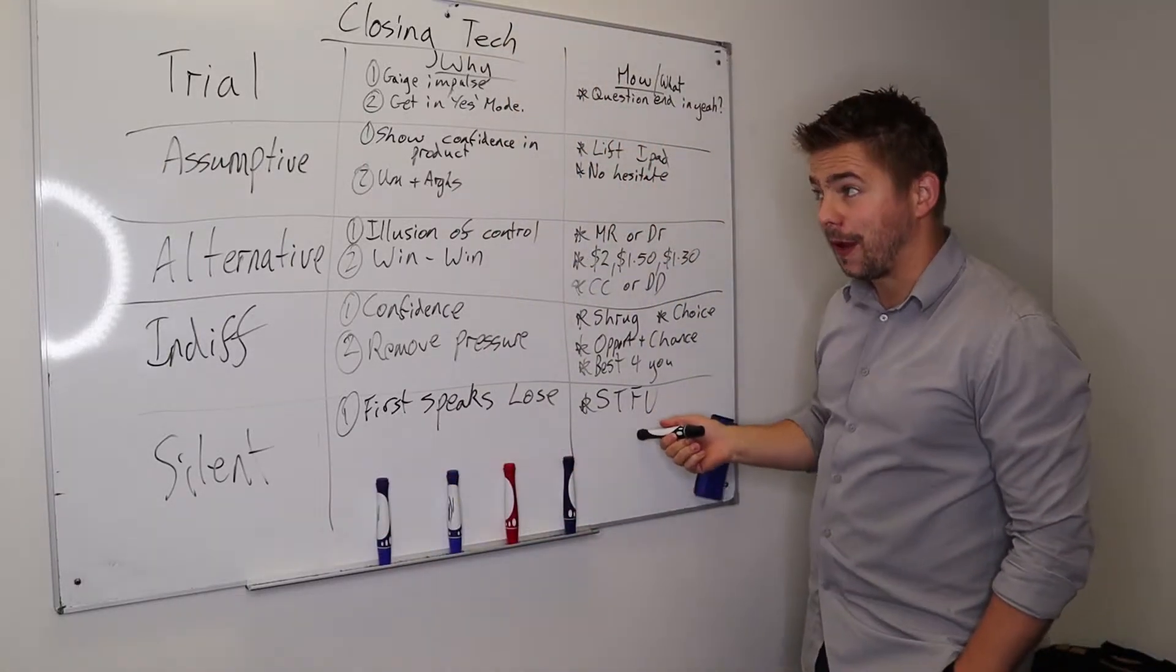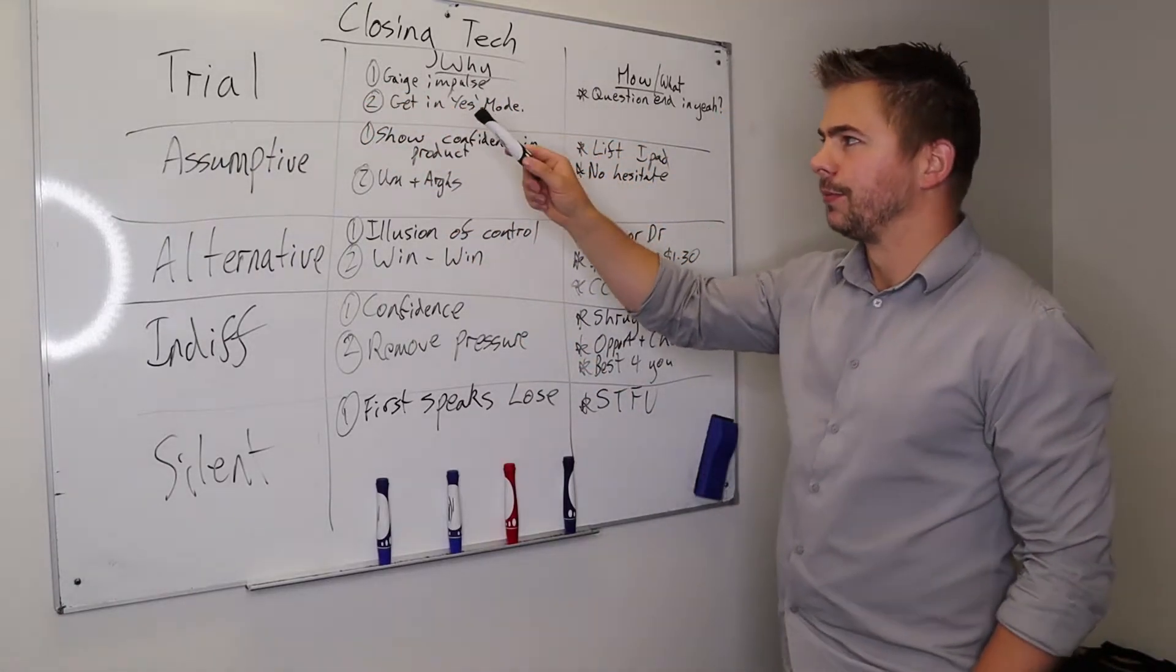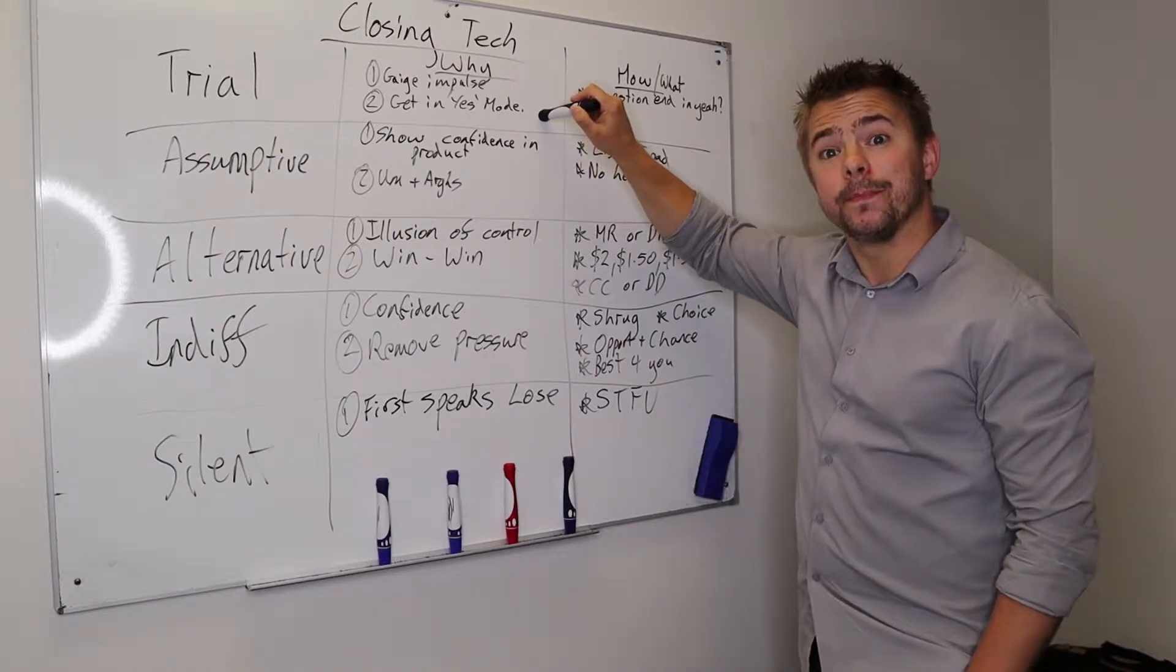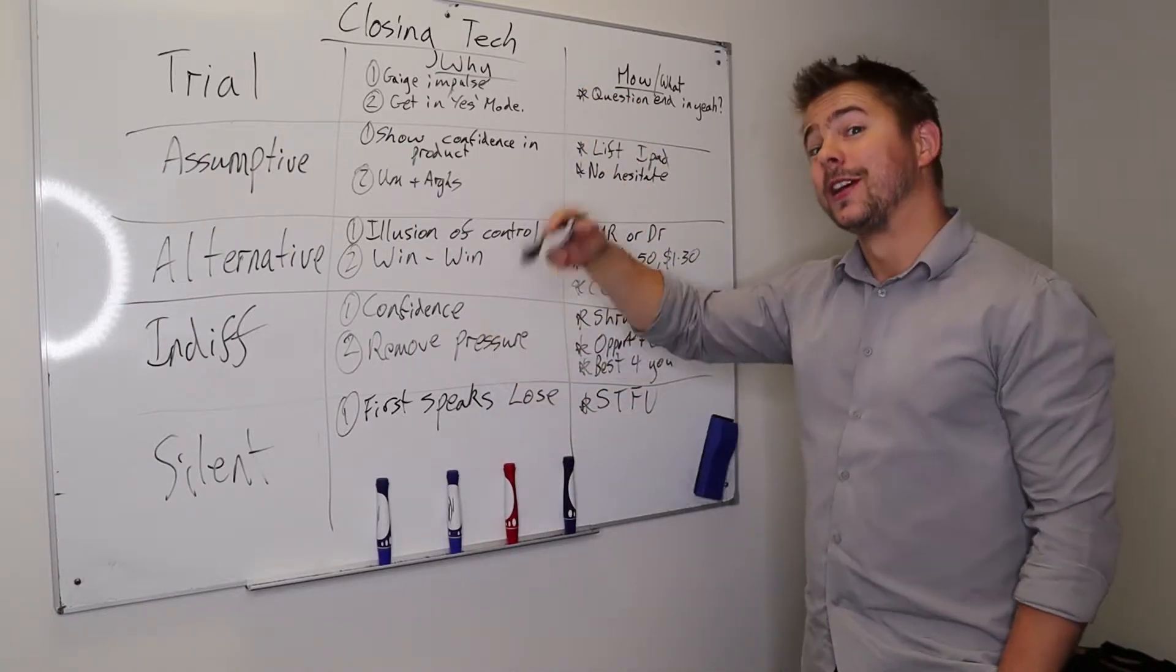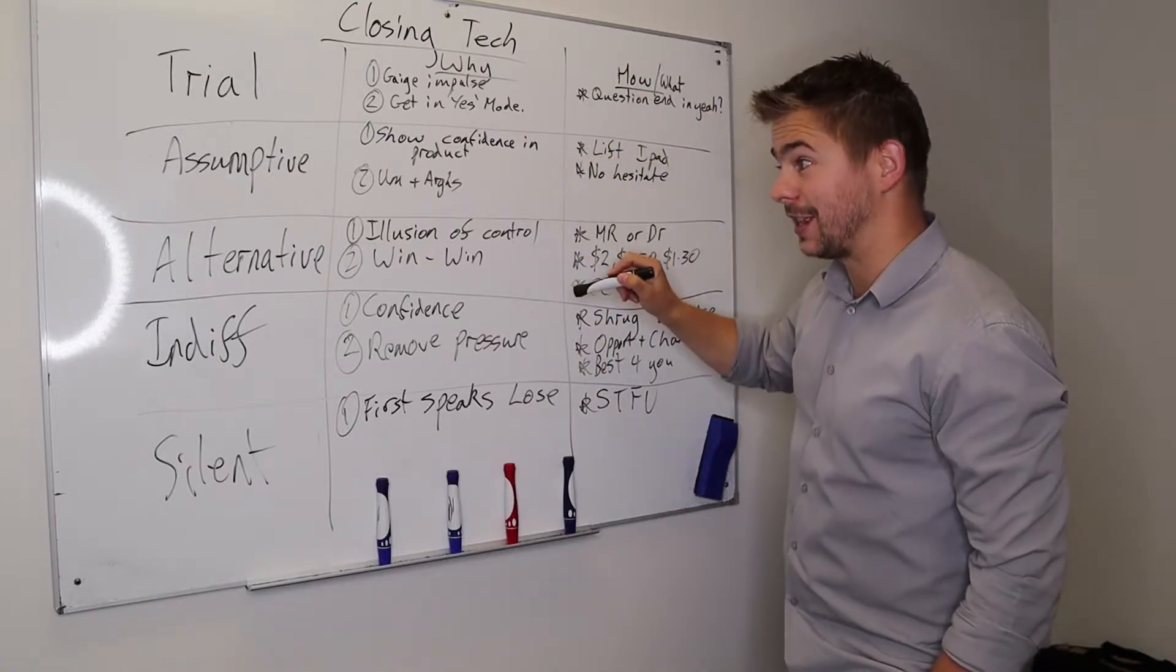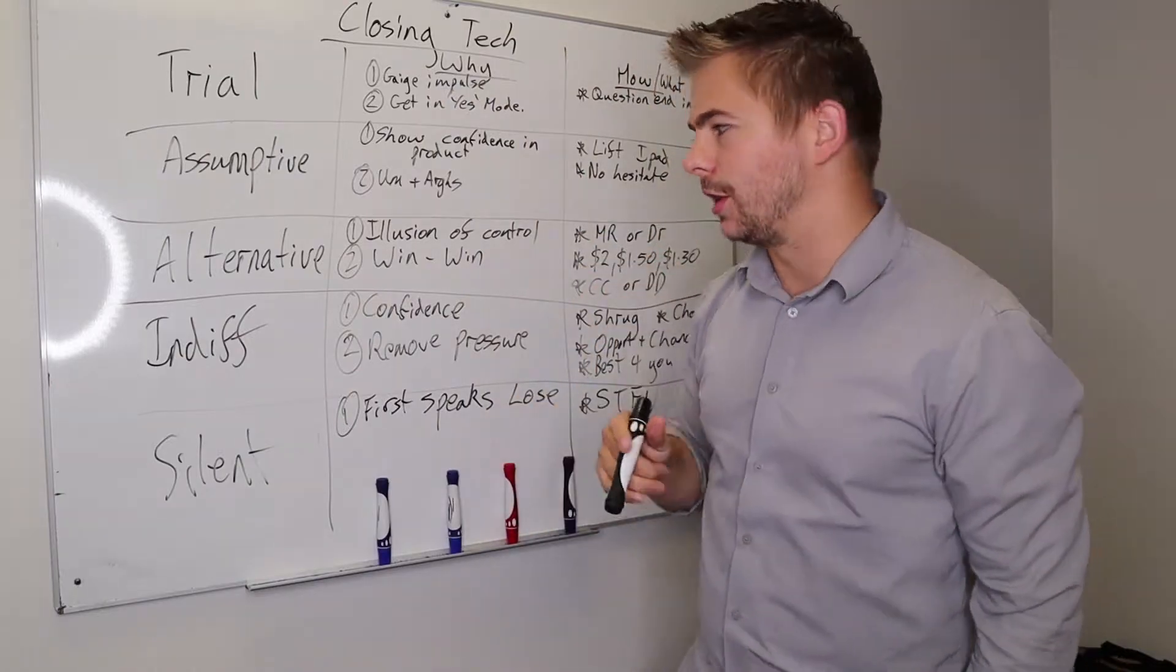You could do a silent close with sound fair enough, mixed in with a trial close. Obviously you might be going, that sounds fair, yeah? And you can end it with a trial close with a yeah, which is a silent and indifferent close as well. They say yeah, you continue, then assume. You've got loads of mix and matches of these, but it's all about combining them.